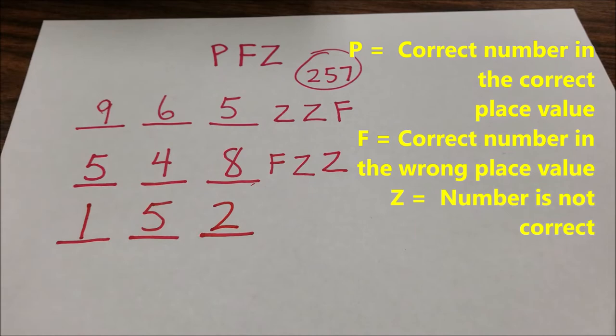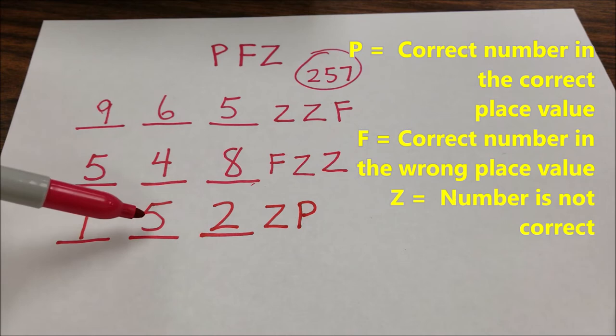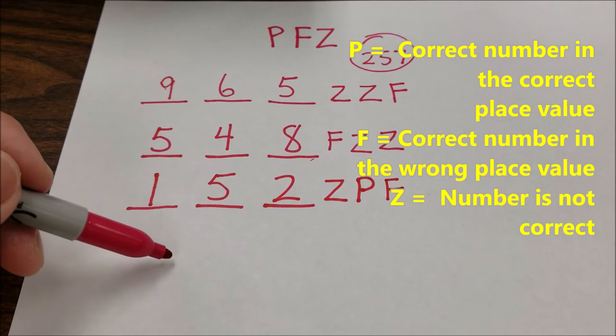So now they know that, okay, 1 is not in the number. P, P is going to mean that they have the right number and it's in the right place value. And now for this 2, they're going to get that. So now you can see how they're going to go, oh, okay, I got a 2. The 2 is an F. Now they know it's going to be in the front here. They know their 5 is in the right spot. All they have to do now is figure out, okay, which number is here.